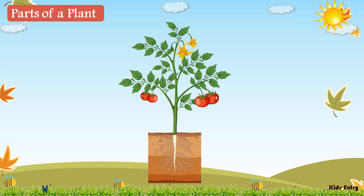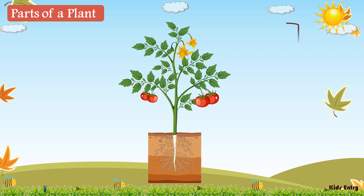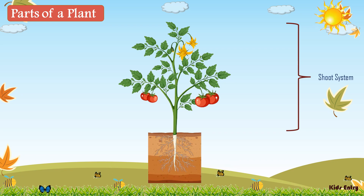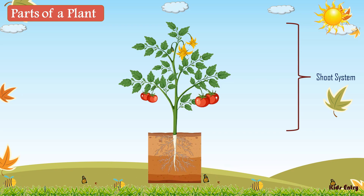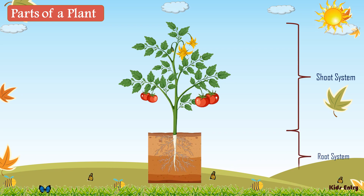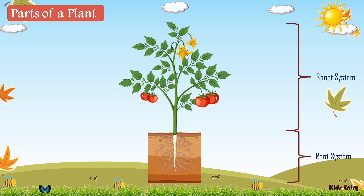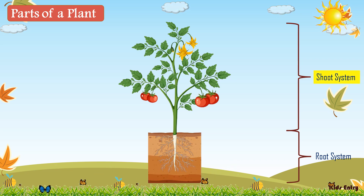Parts of a plant. There are two parts in plants. The shoot system is above the ground level and the root system is below the ground level. Let's see the parts of the shoot system.